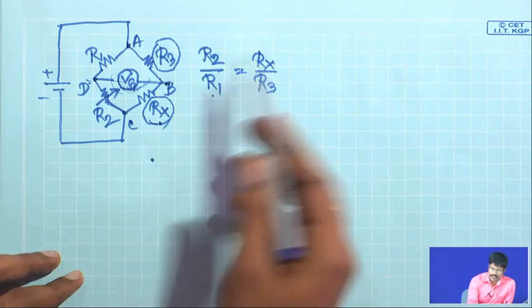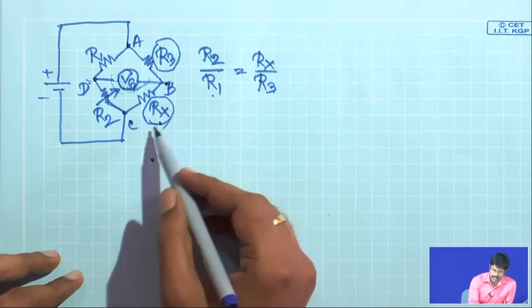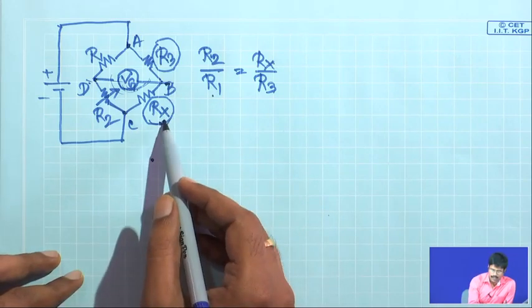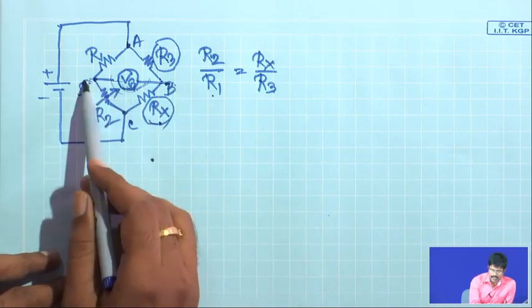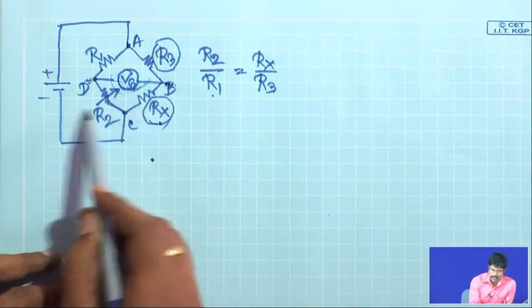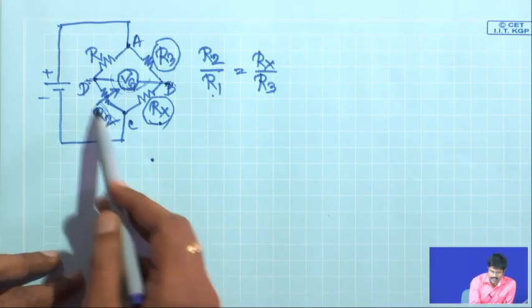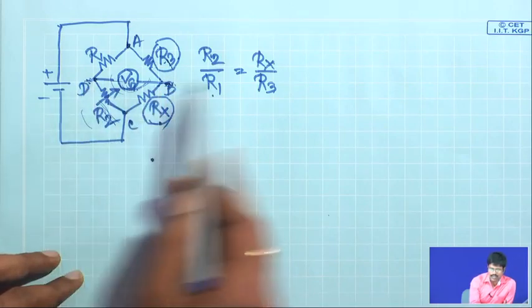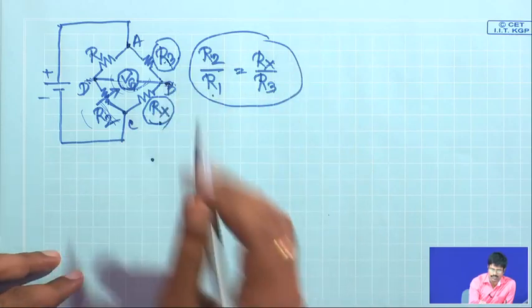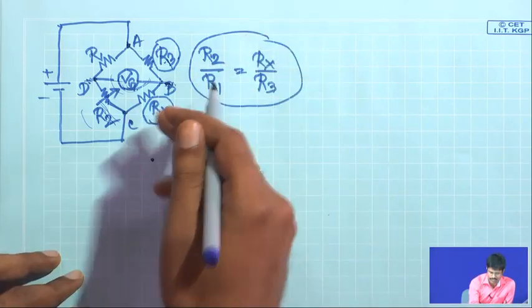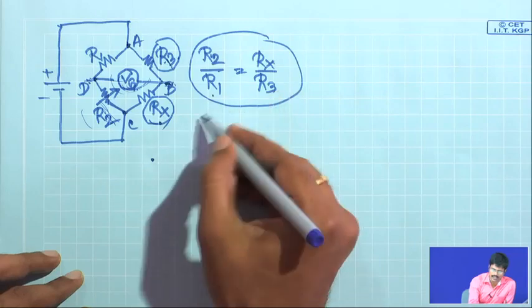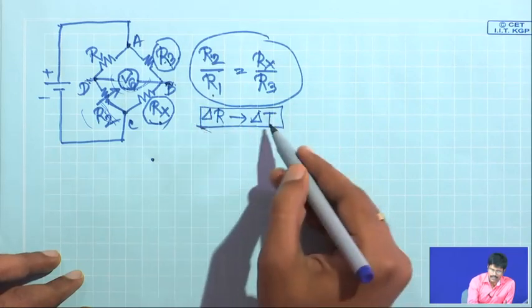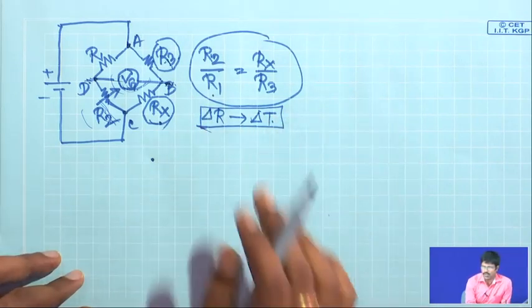Under a certain condition, there will be no current between points B and D. You change the variable resistance R2 until there is no current. Under that condition, the relationship R2/R1 = Rx/R3 is valid. Since you know R1, R2, and R3, you can easily determine Rx. After the experiment, the resistance of the sample bead has changed due to the temperature increase, so you adjust to find delta R, which you can correlate with delta T, and this delta T is related to the molecular weight of the polymer.